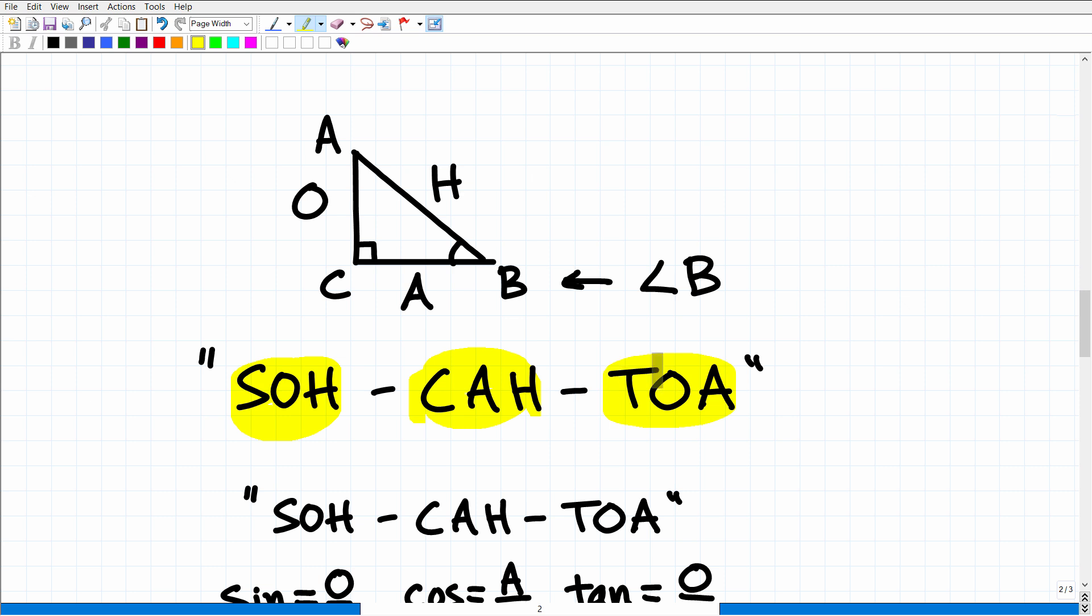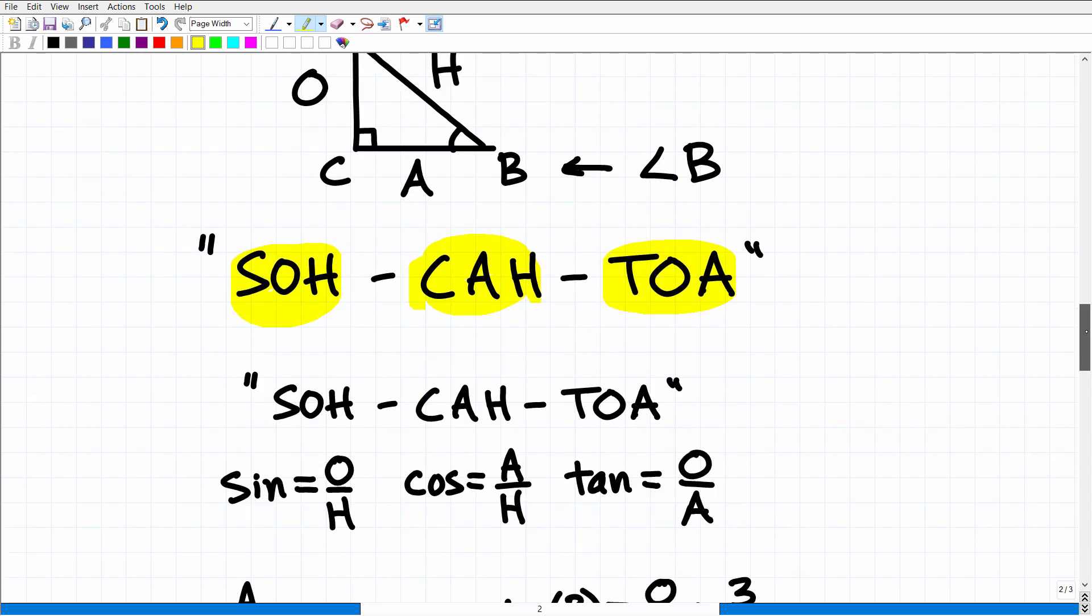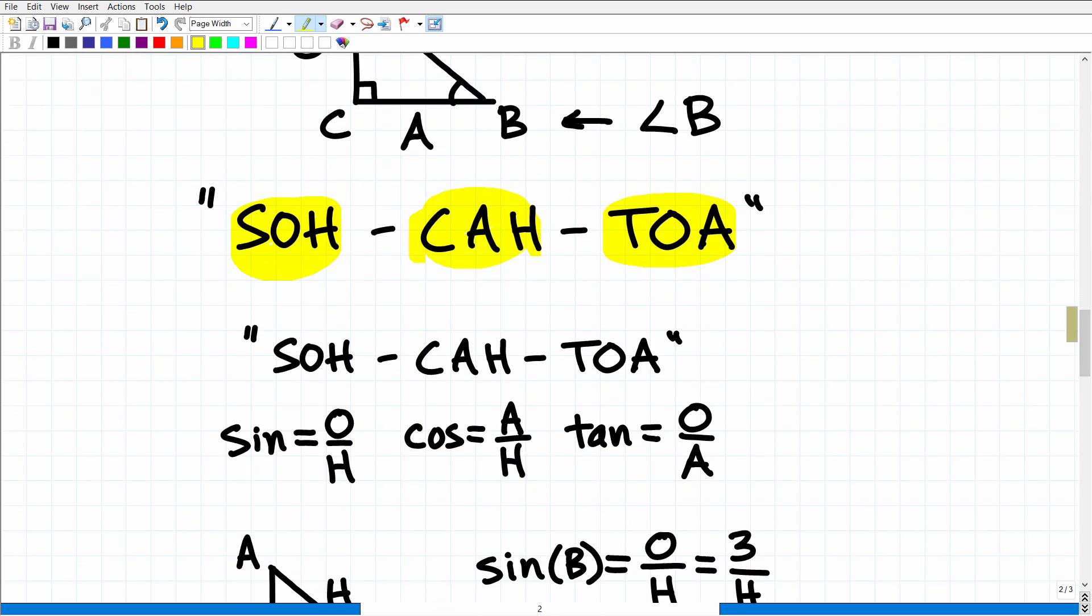Okay, so hopefully you remember this good old saying right here, which is SOHCAHTOA. All right, and what does that mean? Well, it means the following. I'll get back to this triangle in a second. So SOHCAHTOA is just a little mnemonic that helps us remember what is the sine, what is the cosine, what is the tangent. All right, so the sine is equal to the opposite over the hypotenuse. The cosine is the adjacent over the hypotenuse. And the tangent is the opposite over the adjacent.